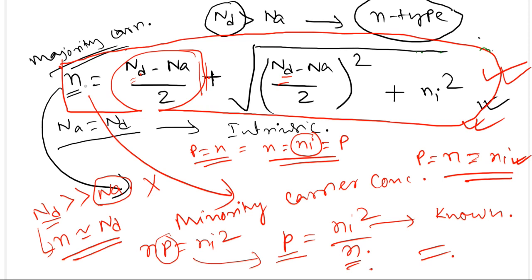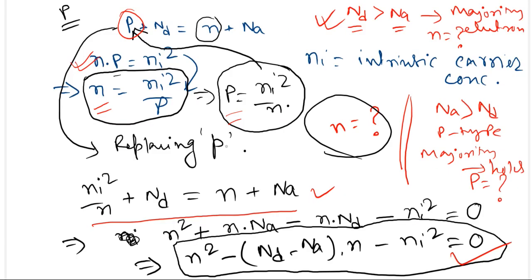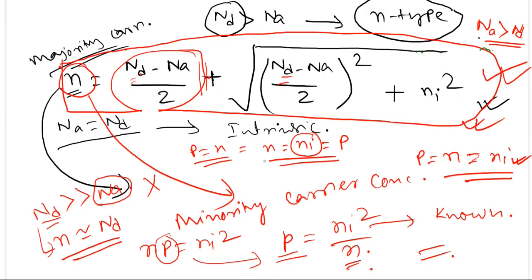In the same way, if it is a p-type semiconductor — meaning Na is greater than Nd — you calculate the hole concentration p instead of n. The derivation starts from the same charge neutrality equation, but now n is replaced by ni^2 / p and substituted in. This gives a quadratic equation in terms of p, and exactly in the same way you can calculate the value of p.